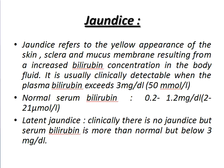First, I will define Jaundice. Jaundice refers to the yellow appearance of the skin, sclera, and mucous membrane resulting from an increased bilirubin concentration in the body fluid. It is easily clinically detectable when the plasma bilirubin exceeds 3 mg per deciliter or 50 mmol per liter. Normal serum bilirubin is 0.2 to 1.2 mg per deciliter or 2 to 21 mmol per liter.